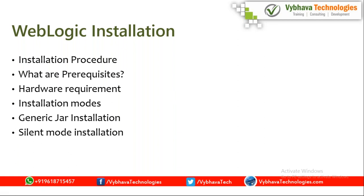For automation, yes, Ansible can be used for WebLogic installation — whatever commands you execute on one machine, you create as a playbook and run from the Ansible master. You can also use Puppet, Chef, or other configuration management tools. For silent mode installation, you use 'java -jar' with two key files: a response file and an inventory file.